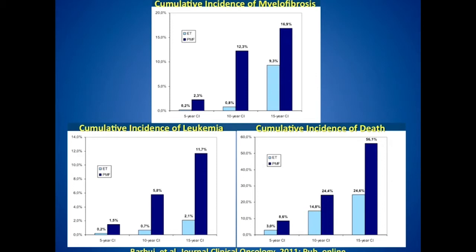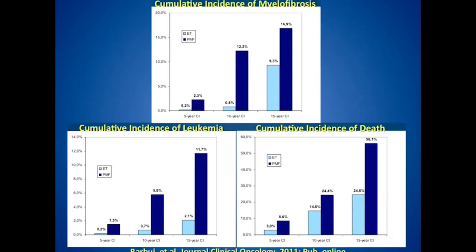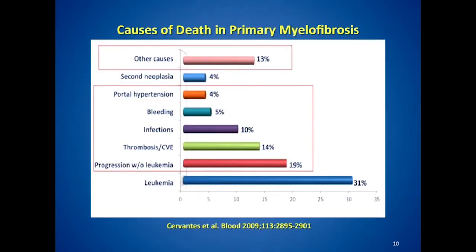Distinguishing these disorders matters because patients with ET have a lower cumulative incidence of developing overt myelofibrosis, a lower incidence of acute leukemia, and a more favorable survival outcome. However, each of these disorders progresses, and a subset of ET patients will undergo evolution to myelofibrosis or MPN blast phase. The goal right now is to prevent disease progression, which is one of the missions of the MPN Research Foundation.